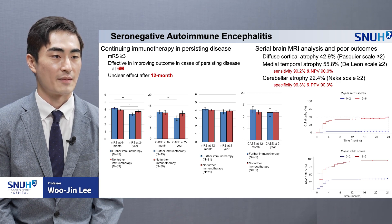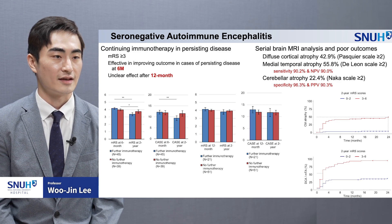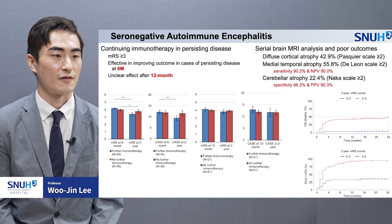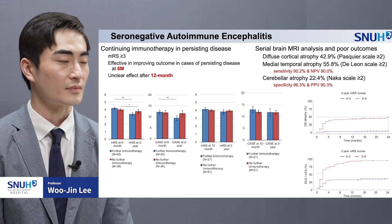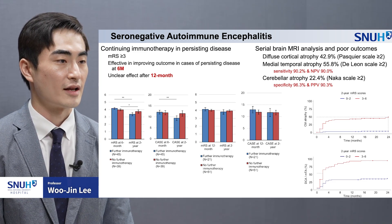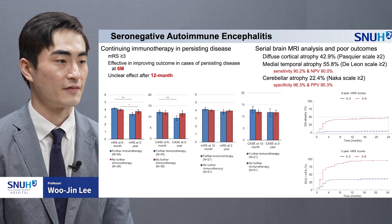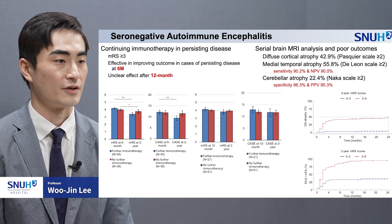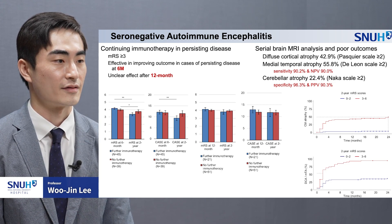In longitudinal MRI analysis, development of cerebellar atrophy indicated poor outcomes with high specificity and positive predictive value, which means a low probability of achieving a good outcome despite further immunotherapy. However, diffuse cerebral atrophy or medial temporal atrophy indicated poor outcomes with high sensitivity and negative predictive value, which means that in the absence of those atrophy patterns, there is a chance that further treatment might improve the outcomes.